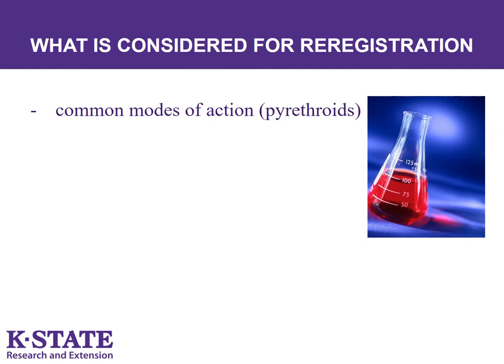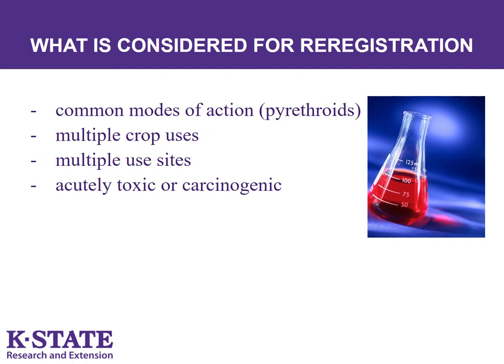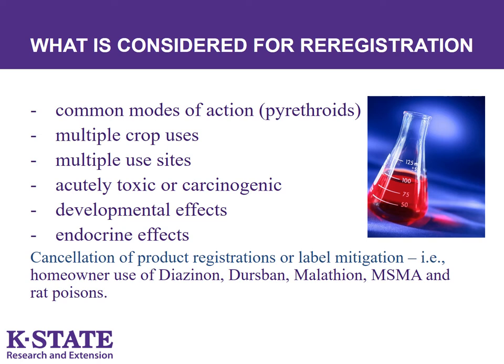What is considered for re-registration? There are a number of factors including common modes of action, multiple crop uses, multiple use sites, whether the product is acutely toxic or carcinogenic, and whether there are any developmental or endocrine effects. This re-registration process may result in cancellation of the pesticide or some uses of the pesticide. For example, diazinon, dursban, and calthane have either been dropped completely or are no longer labeled for homeowner use.